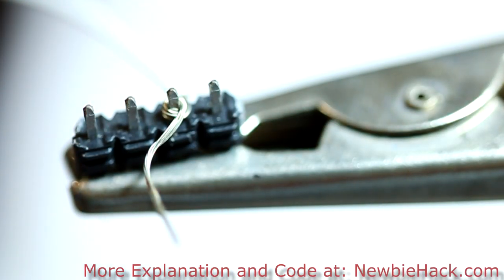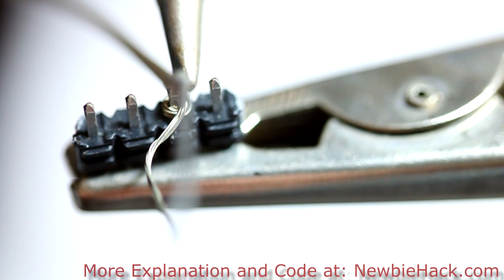Then you simply solder it after you get the wire wrapped around. You only want to touch this wire very quickly and you only want a very little amount of solder on here.